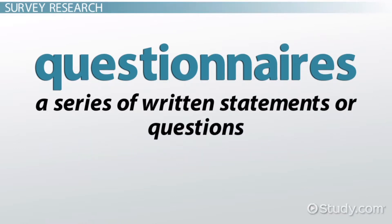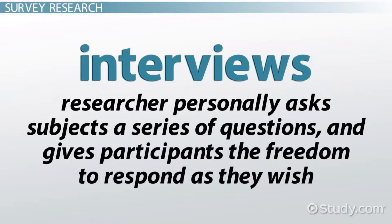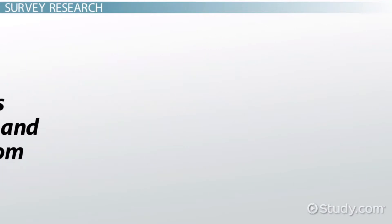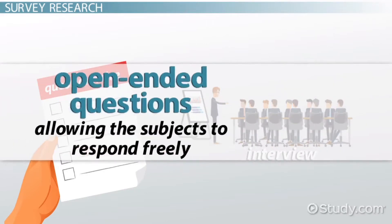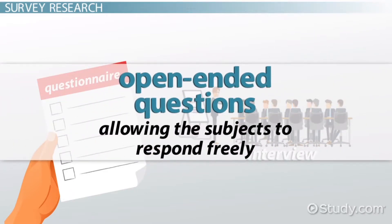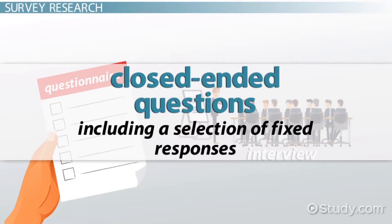The most common types of surveys are questionnaires and interviews. A questionnaire is a series of written statements or questions. With an interview, the researcher personally asks subjects a series of questions, and gives participants the freedom to respond as they wish. Both questionnaires and interviews can include open-ended questions, allowing subjects to respond freely, or close-ended questions, including a selection of fixed responses.